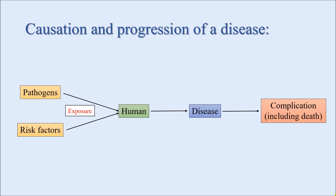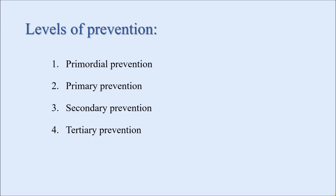This is the natural history of disease, where the disease progresses in a natural pathway when we are not intervening with any kind of treatment or prevention. Now, what are the different levels of prevention? There are four different levels: primordial prevention, primary prevention, secondary prevention, and tertiary prevention. It must be mentioned that often primordial prevention is also included in primary prevention, or said to be a part of primary prevention.